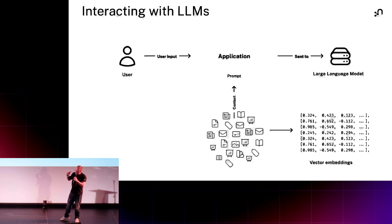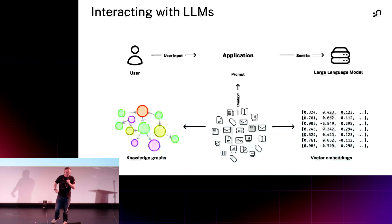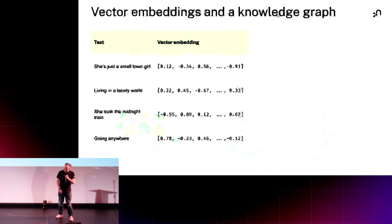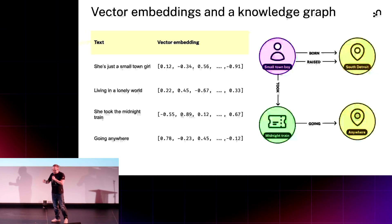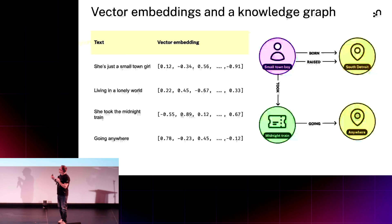We can help our LLM-based applications by using vector embeddings — they're a great source for that vague query. But we can use our knowledge graph to support that vector search by providing contextual information. For example: 'She's a small-town girl living in a lonely world, she took a midnight train going anywhere.' We can represent that information as a graph, with relationships between entities like small-town girl, South Detroit, anywhere, midnight train.